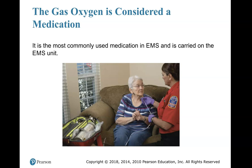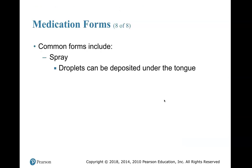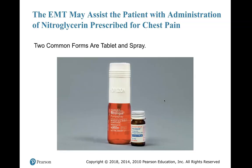Oxygen is a gas and a medication and should be treated as such — it is highly flammable. Sprays can deliver droplets deposited under the tongue. The nitrolingual pump spray is the large red bottle with the white cap, and the small bottle contains nitro tablets. Both nitroglycerin forms go underneath the tongue — sublingually.